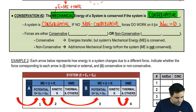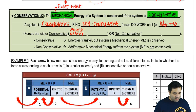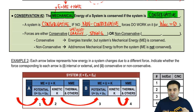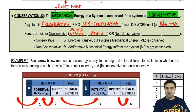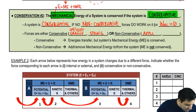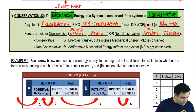Conservative forces are going to be gravity — or more technically, the weight force — gravitational attraction, and any kind of spring force. These are conservative, so you just need to remember that: weight and spring are the only two conservative forces. Non-conservative forces are any kind of applied forces — for example, if you push on something, the force of you — or any kind of friction is non-conservative.